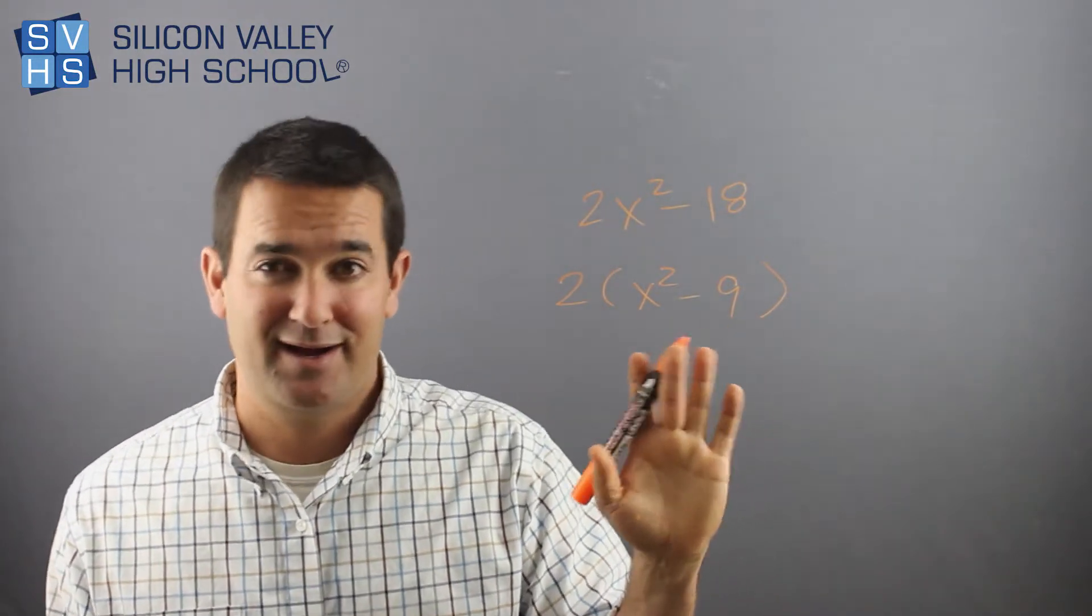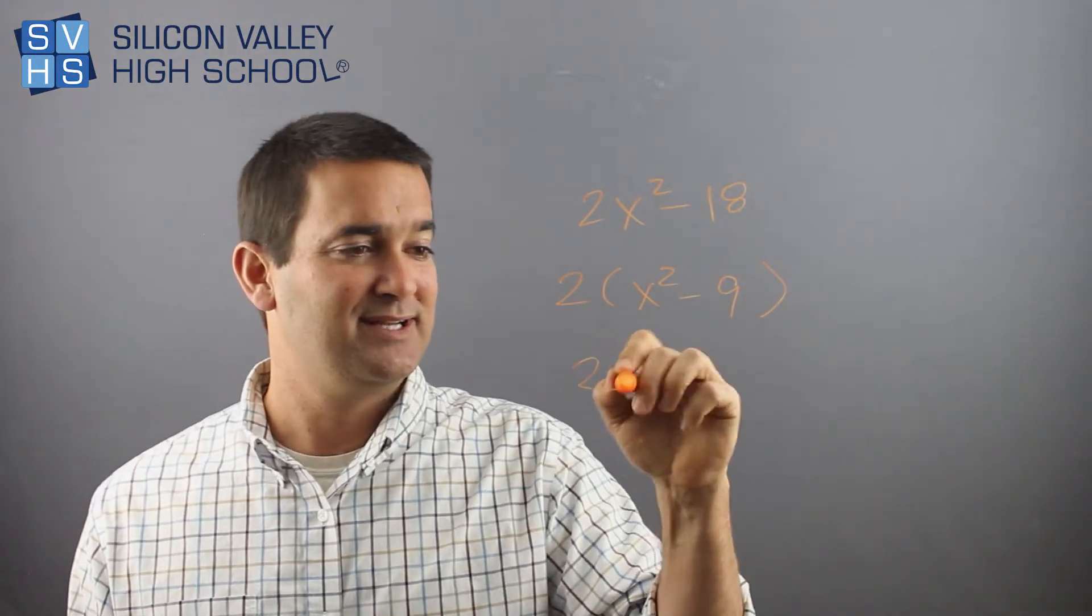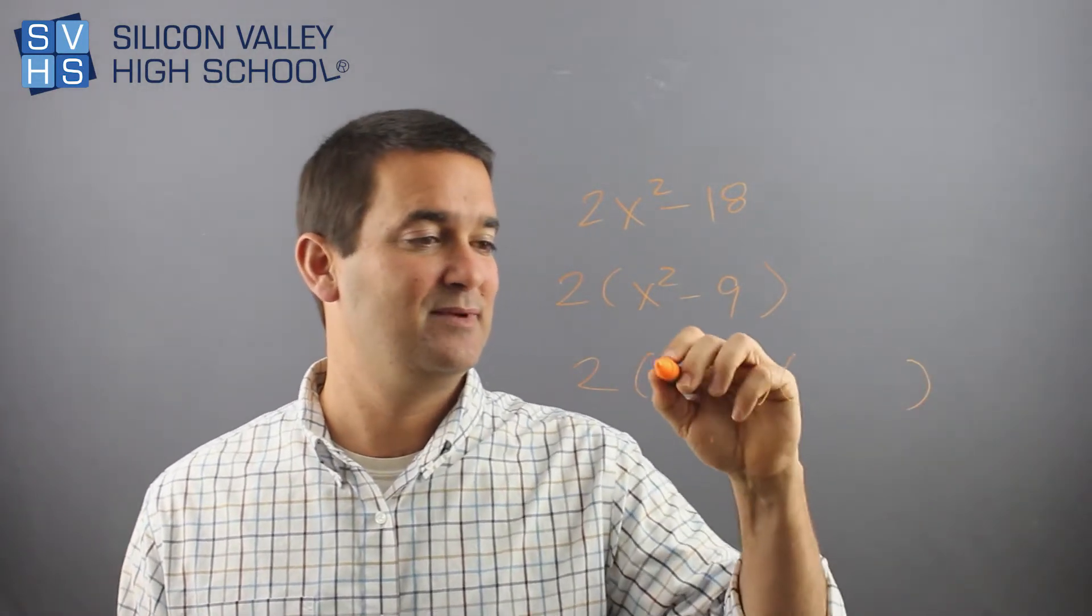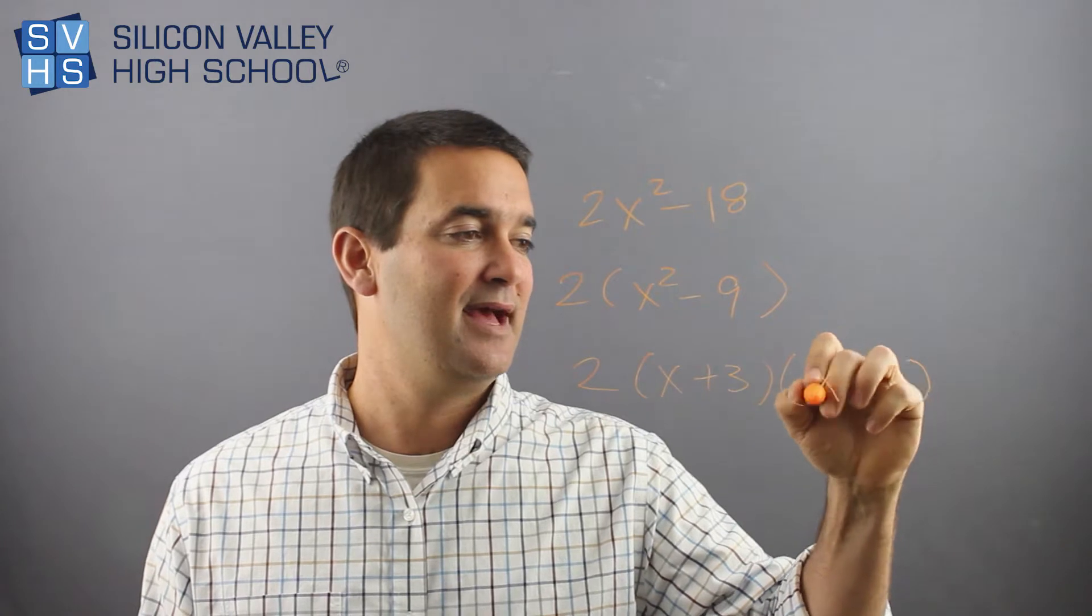Okay, I get it. So now the 2 does not disappear. You keep him and you factor that inside and it becomes x plus 3, x minus 3.